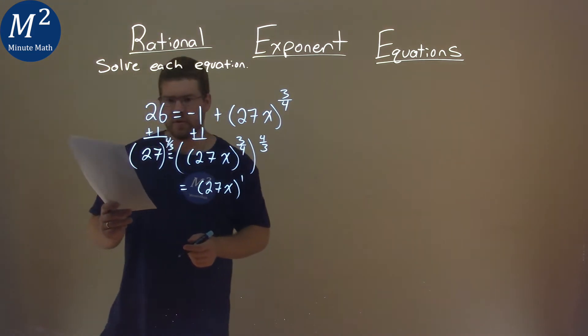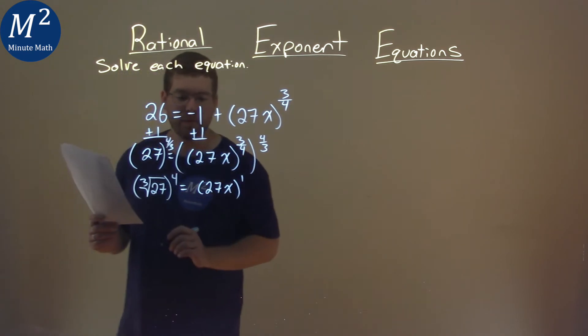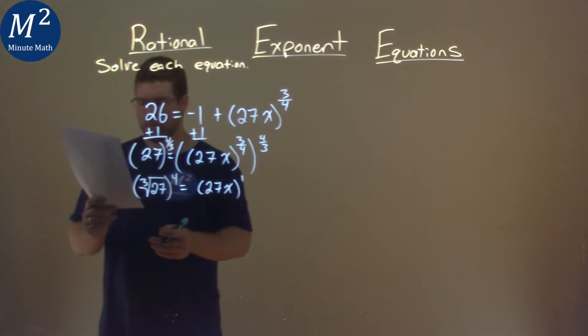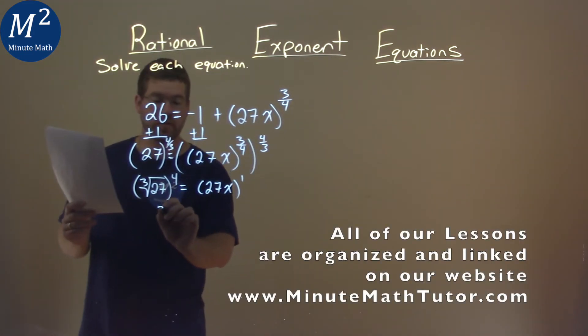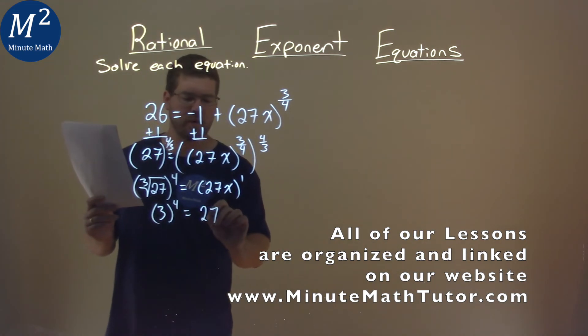27 to the 4 thirds power is the same as the third root of 27, all to the fourth power. So now we've got to keep simplifying. What's the third root of 27? The third root of 27 is 3. I'm going to raise that to the fourth power, and we don't really need to write to the first power here. So it's 27x.